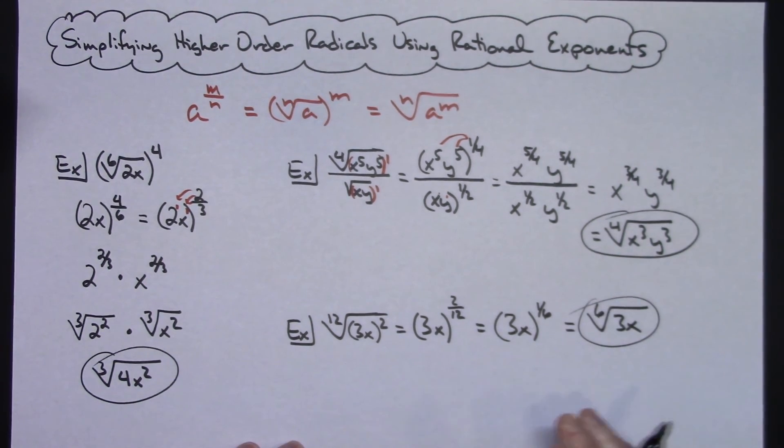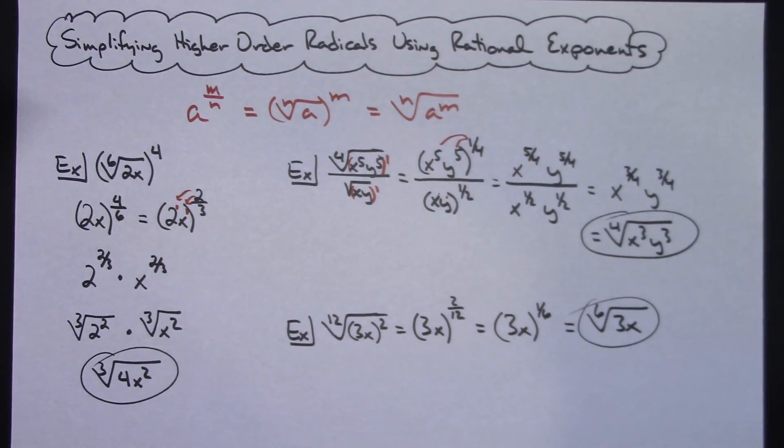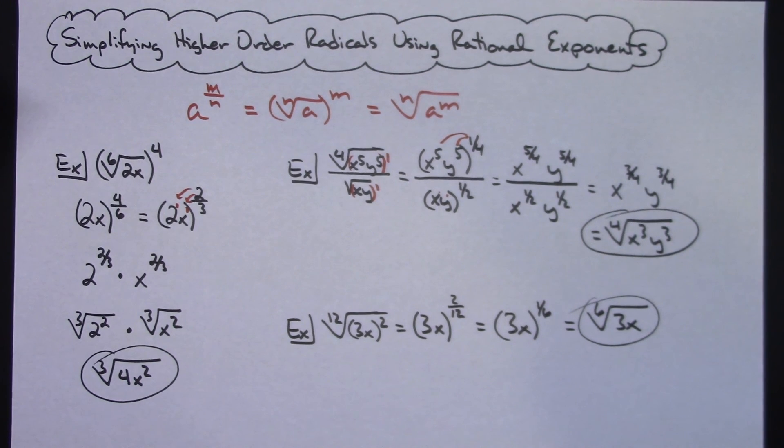So three relatively short examples there of just how to simplify some higher order radicals using your rational exponents. Thanks for watching. Be sure and give me a thumbs up and share with your friends. Thanks!